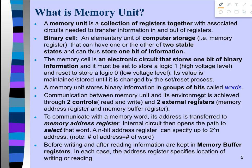A memory unit stores different binary bits, and those groups of bits are usually called words. Furthermore, a memory unit has two different control signals: one is read and another one is write. The read signal is used whenever a user wants to read something from the memory, and the write signal is used whenever the user wants to edit or write something into the memory.